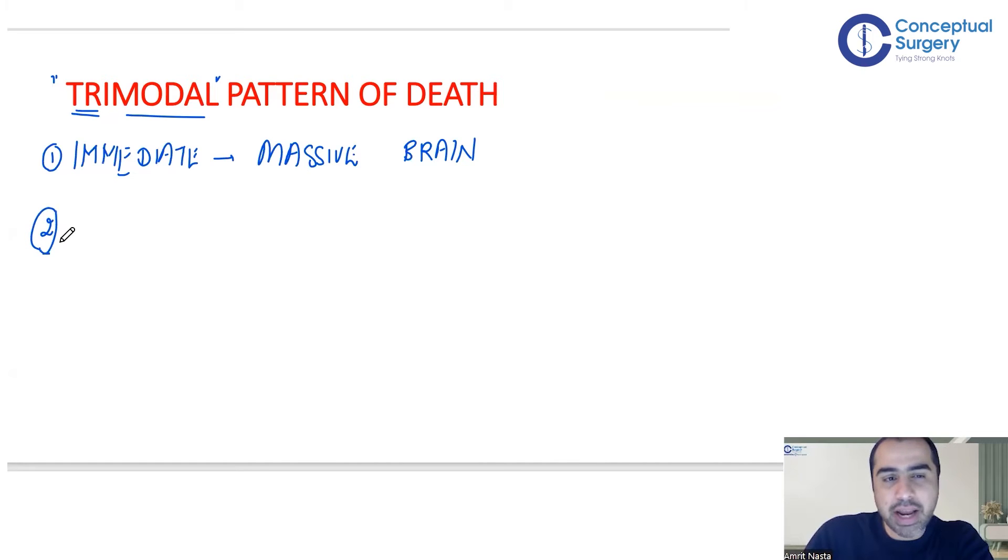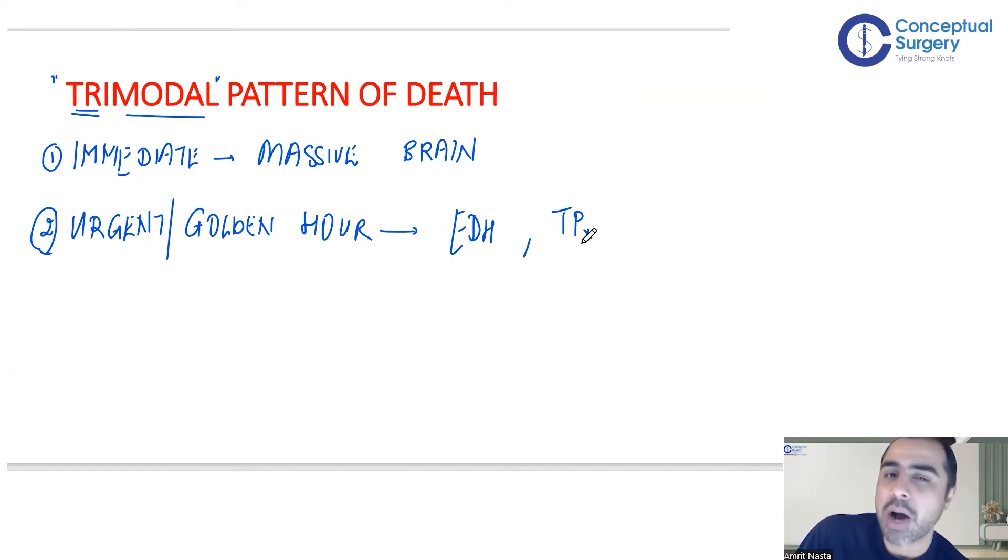The second group of patients can be saved but may die if you don't intervene. This is called the golden hour of trauma - if you intervene within the first hour, sometimes within a few minutes, the person can be saved. This is where the true role of a trauma physician comes in, identifying these patients and saving them. Life can be saved by timely intervention, ideally within 60 minutes, but it varies by injury. This applies to things like extradural hematoma or tension pneumothorax. In tension pneumothorax, it should be within a few minutes, or airway obstruction, cardiac tamponade, and similar conditions.